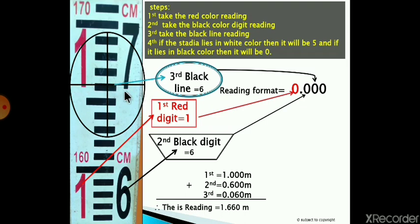This is called stadia. Here this is the middle stadia. You have to take the reading over this line, this black color line. First we will take the red color reading. Here the red color reading is one, and this will be placed here.